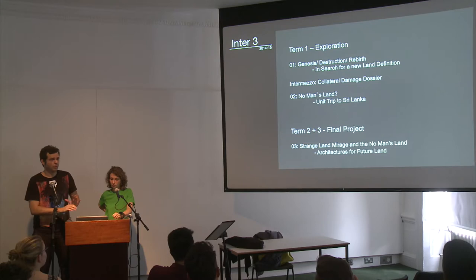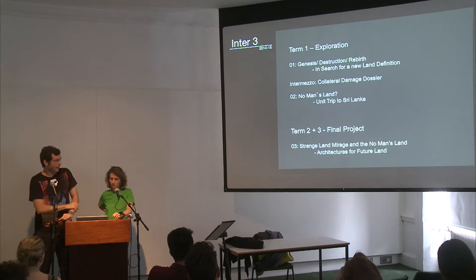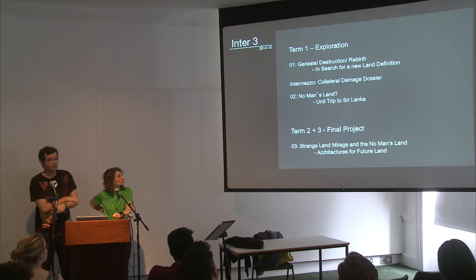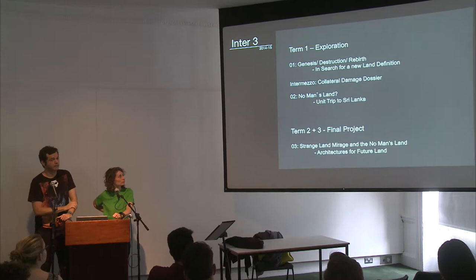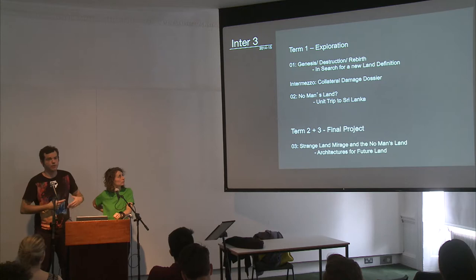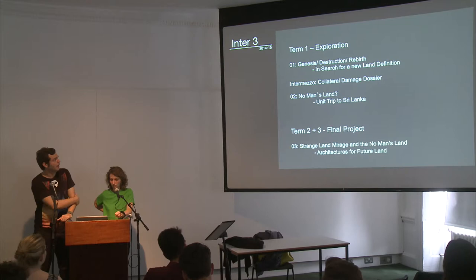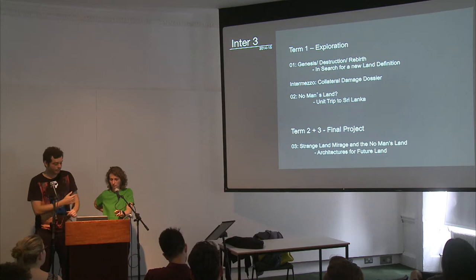I think you want to know what you're going to be doing more specifically. If you saw the extended brief, we're going to be looking at Term 1 — October, November, December — called Genesis, Destruction, Rebirth: In Search of a New Land Definition. Then we're going to look at the production of a document which includes a film and also a printed document of the first term. In the second term, we're going to be looking at the unit trip. We'll explain bit by bit.